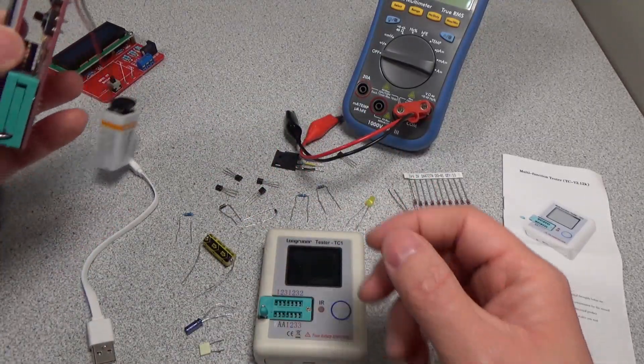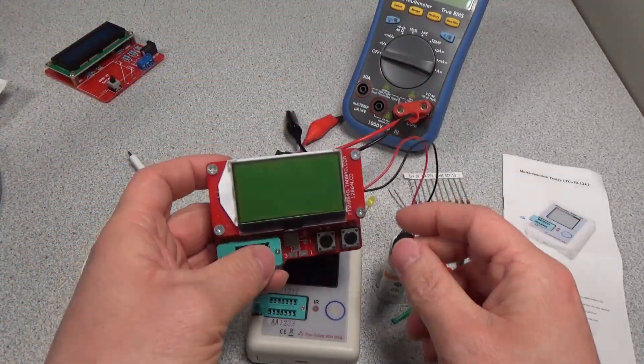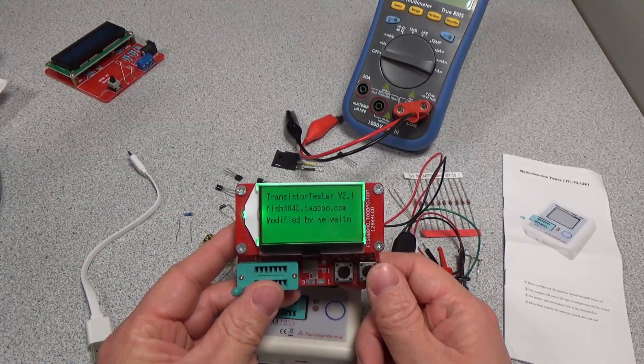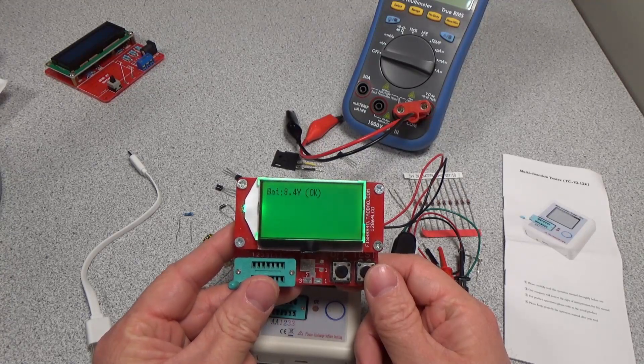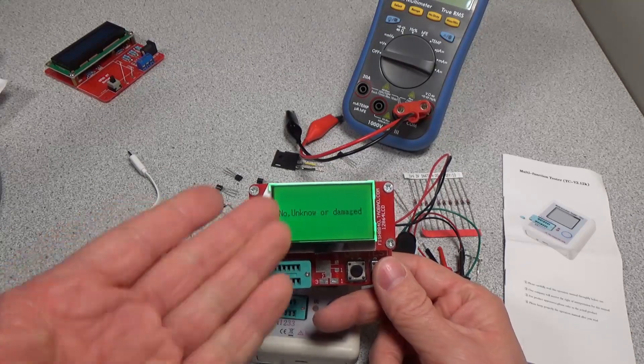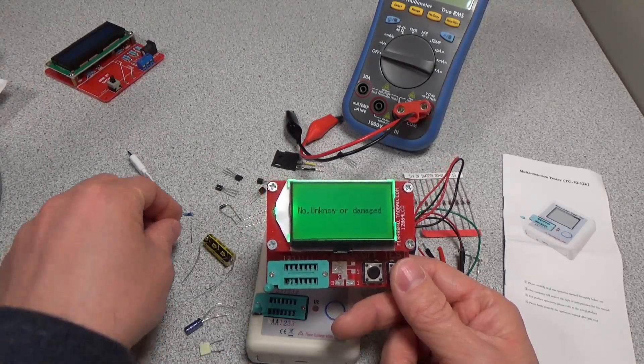The evolution of that product was this, and this one is quite a bit better. So this one, you push the button, it goes through some firmware stuff, and then it tells you your battery voltage and then goes ahead and does the test. There's no unknown or damaged component in there.